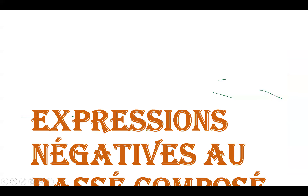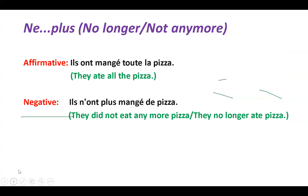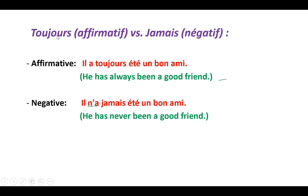Now let's talk about negation in the passé composé. In passé composé we use 'être' or 'avoir' as auxiliary verbs. For example, 'ils ont mangé toute la pizza' — they ate all the pizza. When we have 'tout' (all), the negation uses 'ne...plus' (no longer/not anymore): 'ils n'ont plus mangé de pizza.' 'Ne' and 'plus' surround the auxiliary verb, and the past participle follows.